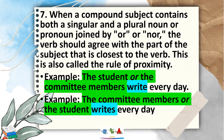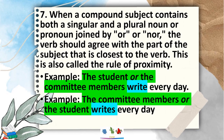Another example of Rule 7: 'The committee members or the student writes every day.' The verb should agree with the part of the subject closest to the verb. In this example, the noun closest to the verb 'write' is 'student.' Since student is singular, it takes a singular verb: 'writes.'